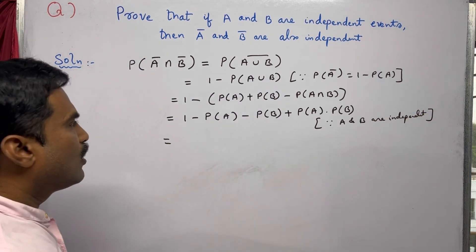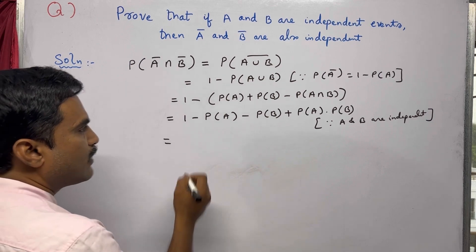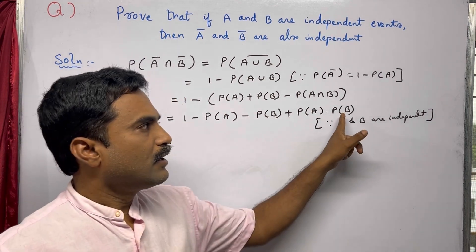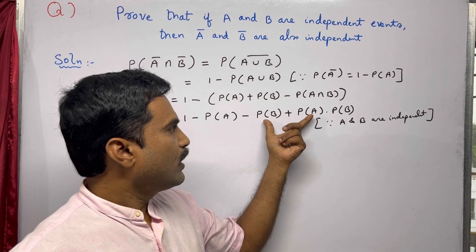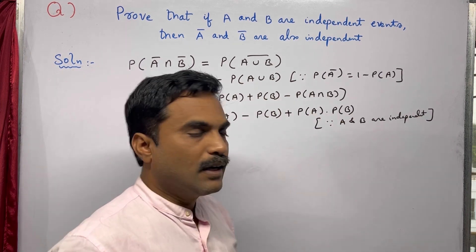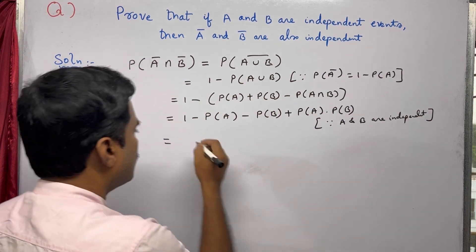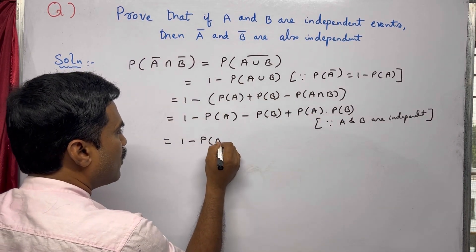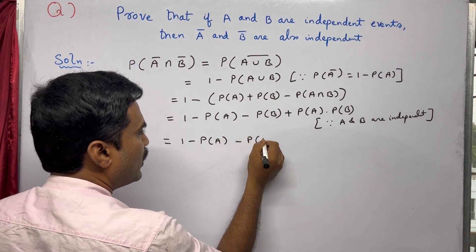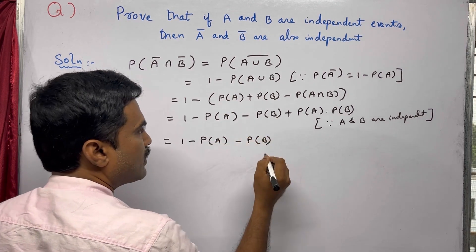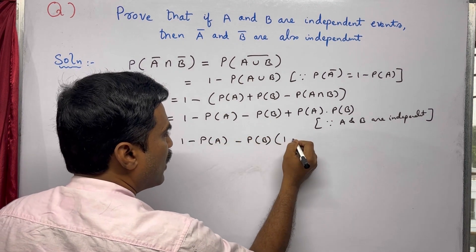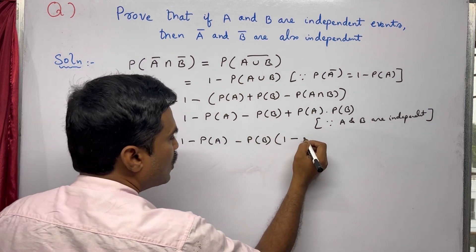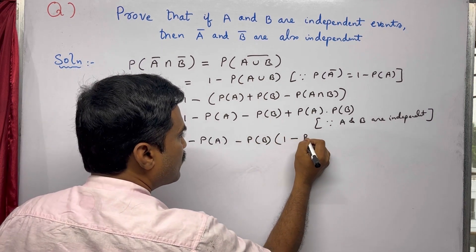Now observe that P(B) appears in two terms. Take P(B) as common from those terms. This gives us: [1 − P(A)] − P(B) · [1 − P(A)], factoring P(B) out to get (1 − P(A)) − P(B)(1 − P(A)).